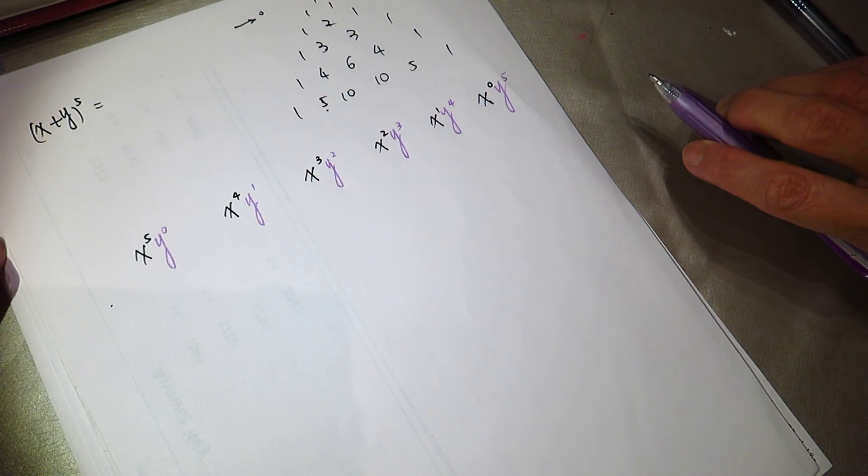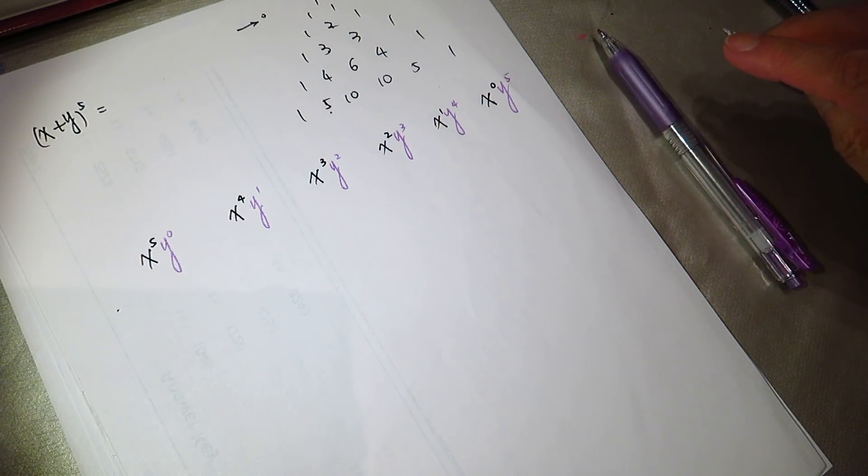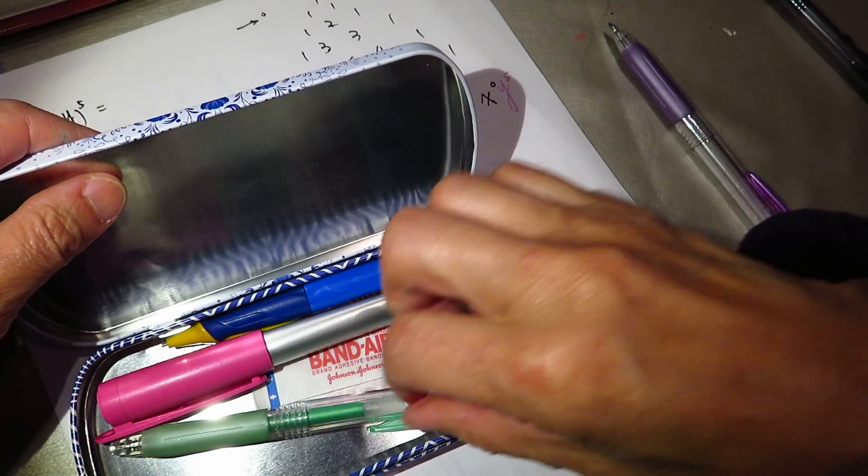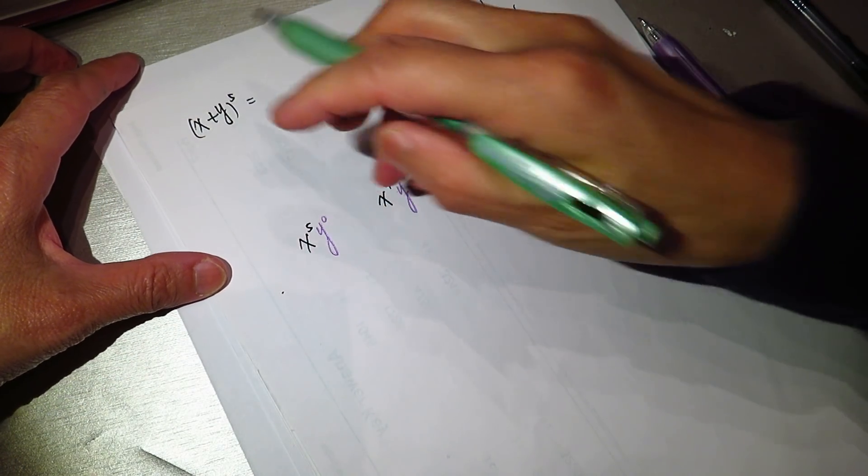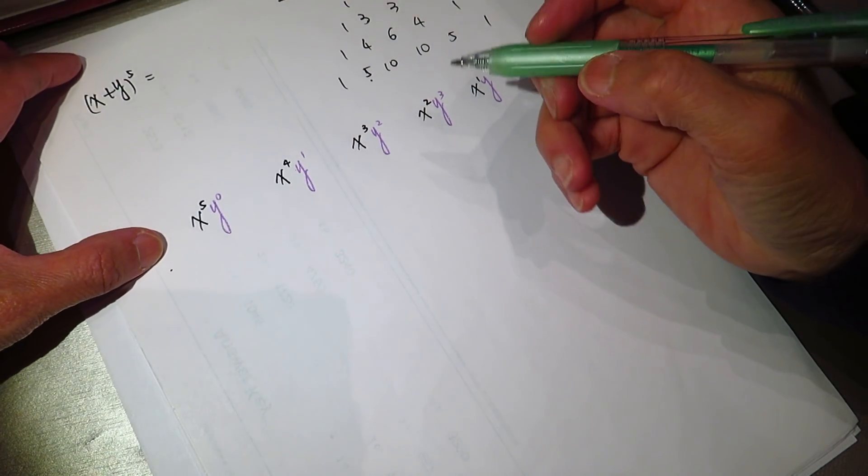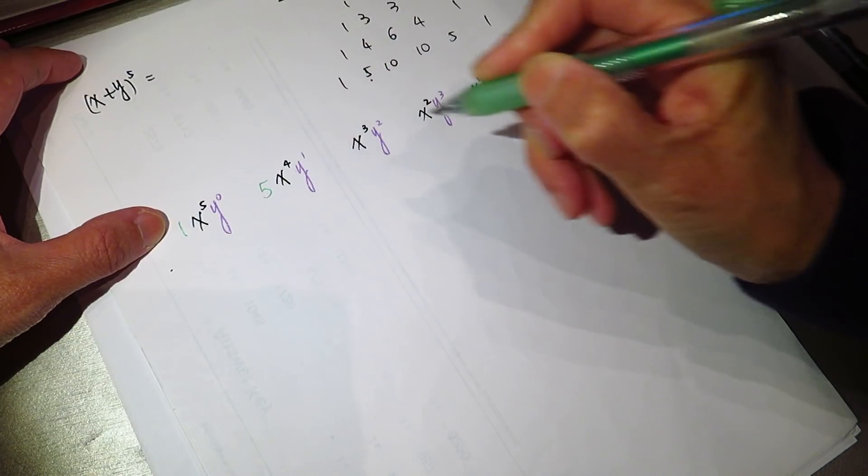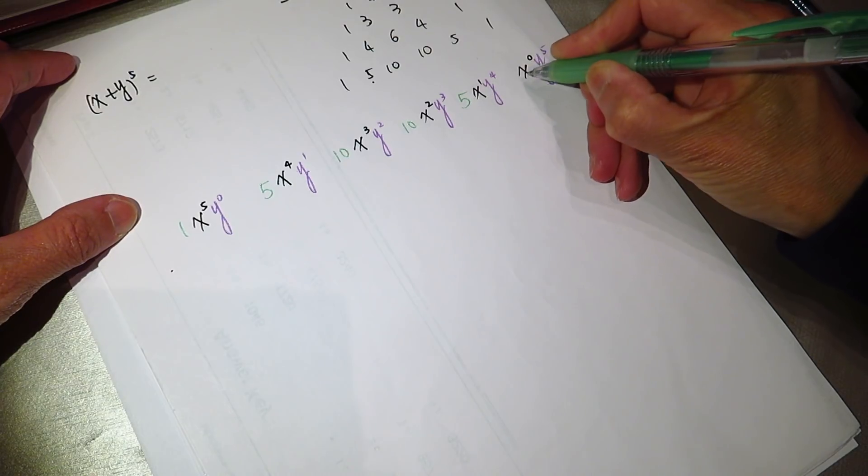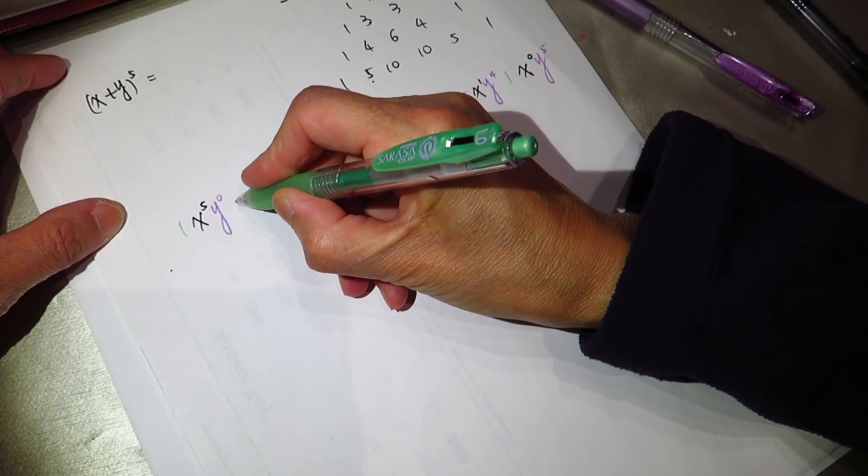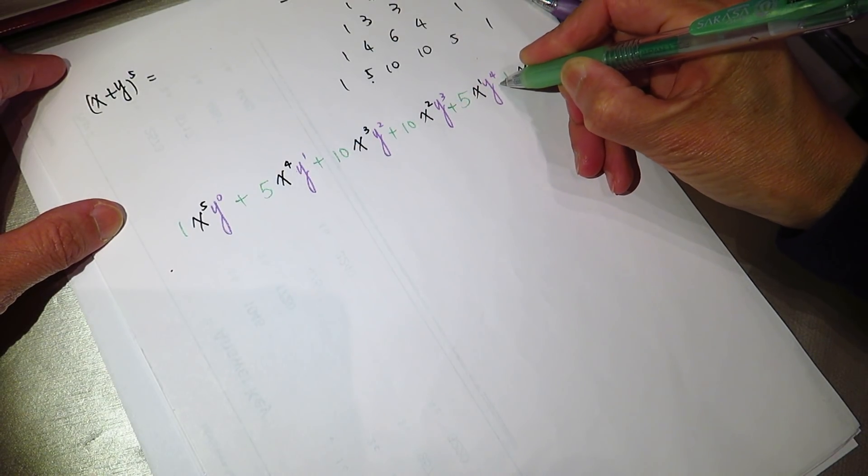And now, we will need to work on to put in all these coefficients. I will use a green pen to do this. And this is positive, so all the numbers are positive, which is easy. One, five, ten, ten, five, one. And it's all positive. It's a happy day. We are all positive.